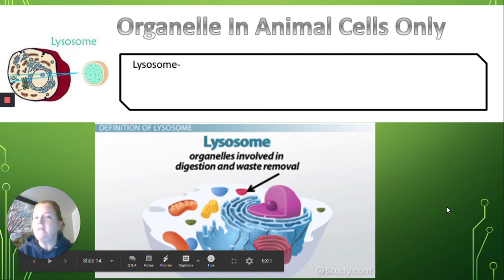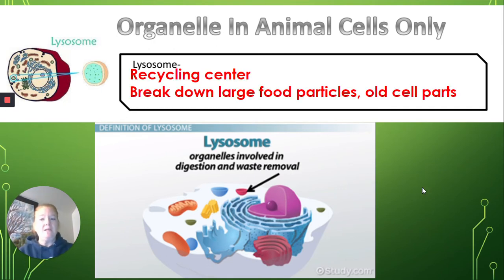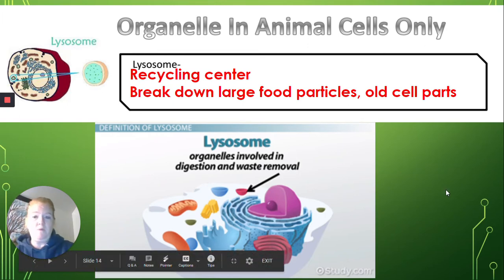The organelles that are found only in animal cells. One we're going to focus on in this lesson, and that's a lysosome. A lysosome is like a recycling center or a site of digestion. It breaks down large food particles, old cell parts, sometimes bacteria if it's in a white blood cell. And the important thing is that it doesn't just get rid of it. Once it breaks it down, it recycles and reuses all the things that the cell could make use of again. And this is important in terms of conserving energy and not being wasteful.